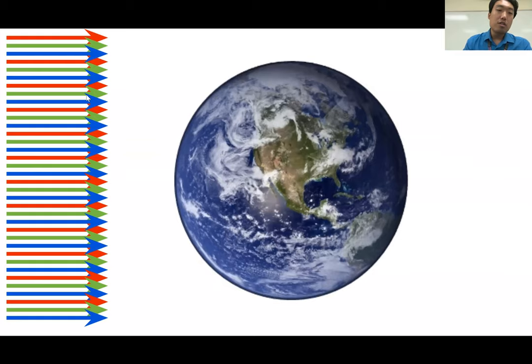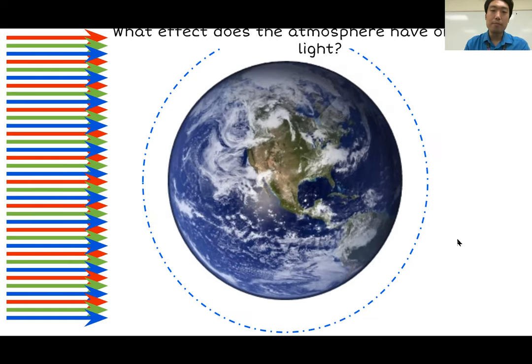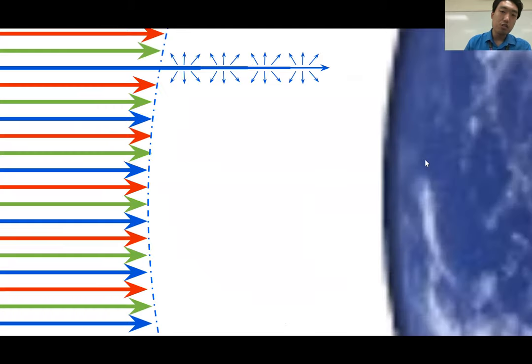And so, the sun rays come in pretty much parallel because it is so far away from the earth. And before it reaches the surface of the earth, it has to go through this atmosphere here. And that blue dotted line represents the atmosphere. So, what effect does the atmosphere have on incoming light? That is the question.